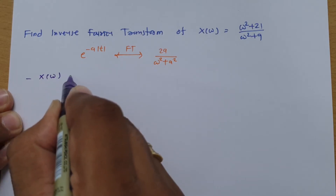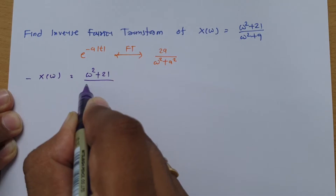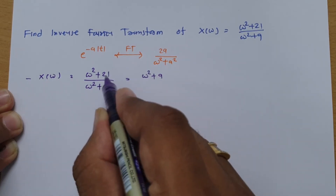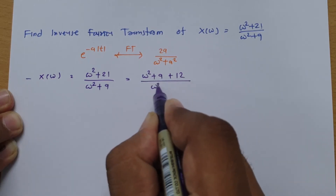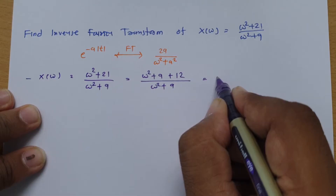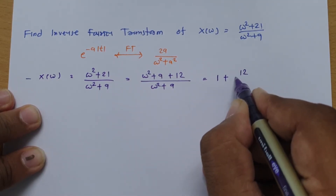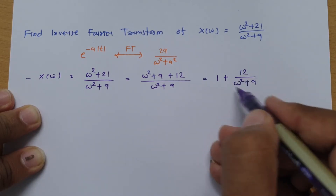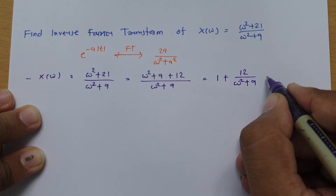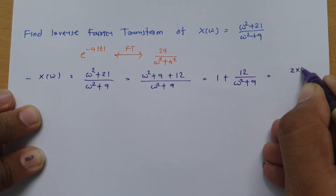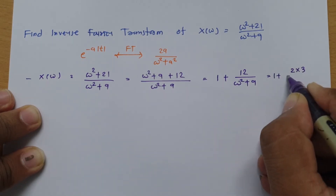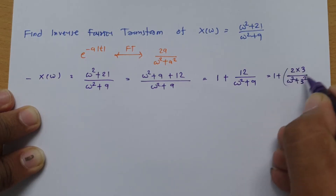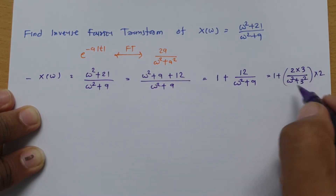We have X(Ω) = (Ω² + 21)/(Ω² + 9). I rewrite the numerator as (Ω² + 9) + 12, since 9 + 12 = 21. This gives 1 + 12/(Ω² + 9). Now to match the standard form 2a/(Ω² + a²), note that a = 3 since 3² = 9, so 12 = 2 × 3 × 2. Therefore X(Ω) = 1 + 2·(2·3)/(Ω² + 3²), which we rewrite as 1 + 2 · (2×3)/(Ω² + 9).